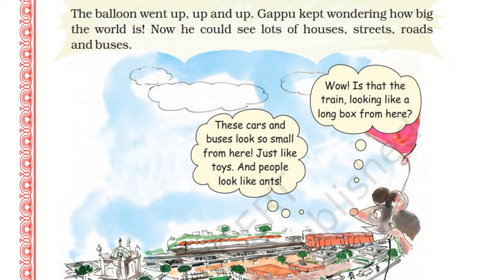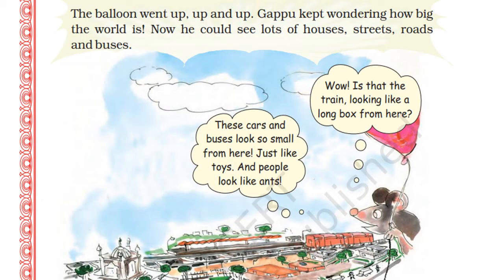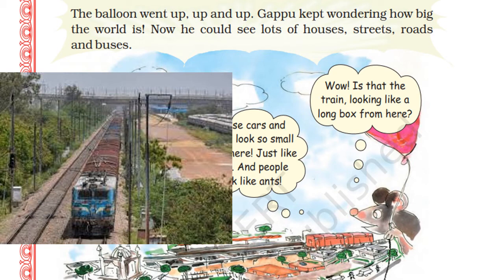Children, when we are travelling in an aeroplane, things look very small. Whatever the city may be, we can see it from the aeroplane — it is very far from the land, so everything looks small. Gappu saw a train on the railway track and thought that the train looks like a long box from up there — from the top.